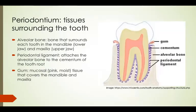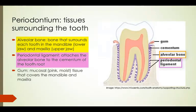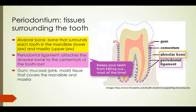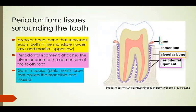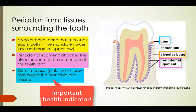The periodontum is another term for tissues that surround each tooth. The alveolar bone is what surrounds each tooth in the mandible and maxilla. There is a periodontal ligament that connects the alveolar bone to the tooth, which is why — unless you experience some form of trauma to the mouth or have a diseased tooth — your teeth will never fall out. Finally, the gums are the mucosal tissue that covers the mandible and maxilla. Your gums often indicate your general health; for example, if your gums are red it could mean you have some inflammation.